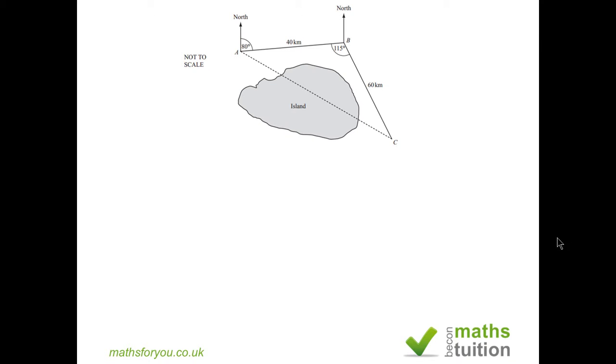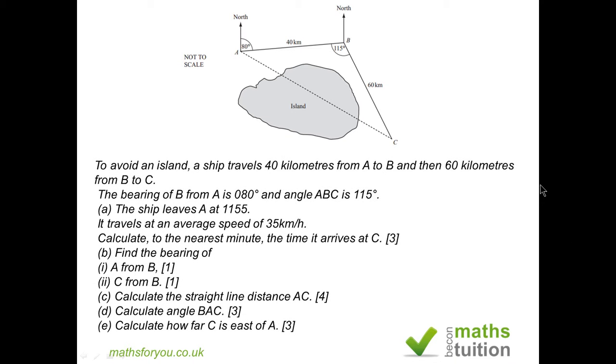This is a typical exam question, and as you can see, there is quite a lot to take in at the same time, so we should look at each question in turn. But can you also note from the outset that the bearing of B from A is 080 degrees, and it's not 90 degrees, so in effect B is not directly east of A. If B were directly east of A, then the angle should be 90 degrees.